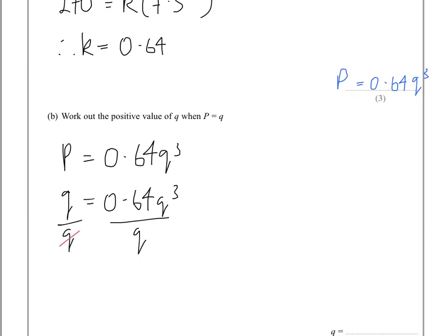That would cancel with Q on one side to give us 1, and cancel on the other side to give us Q². So we'd end up with Q² = 1 over 0.64, so that means that Q equals the square root of 1 over 0.64.